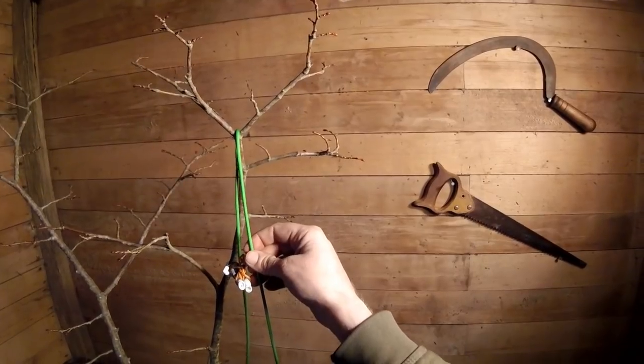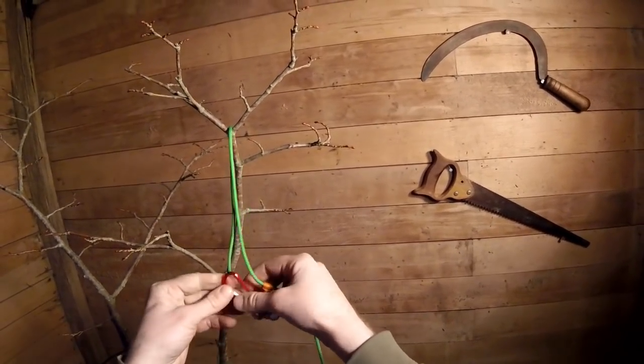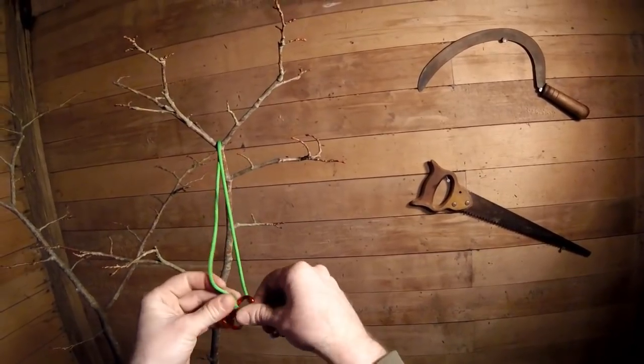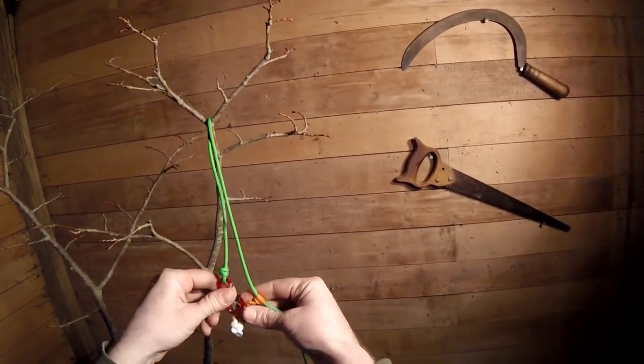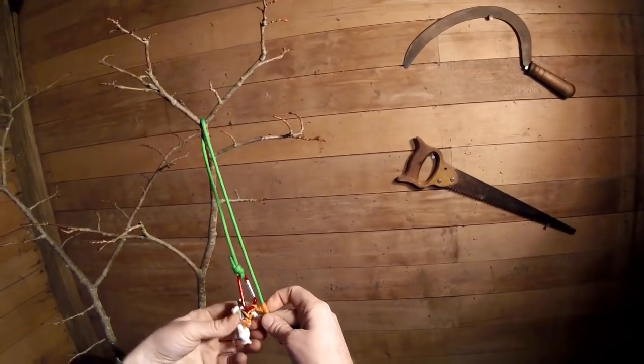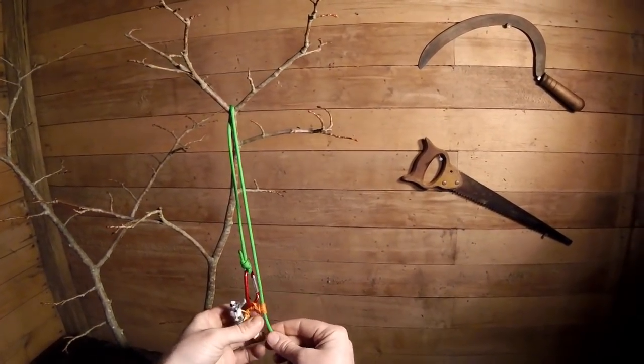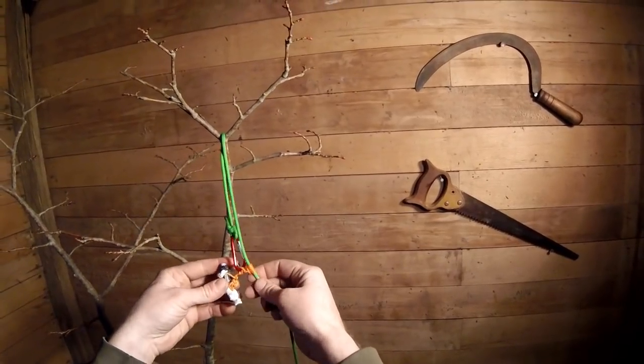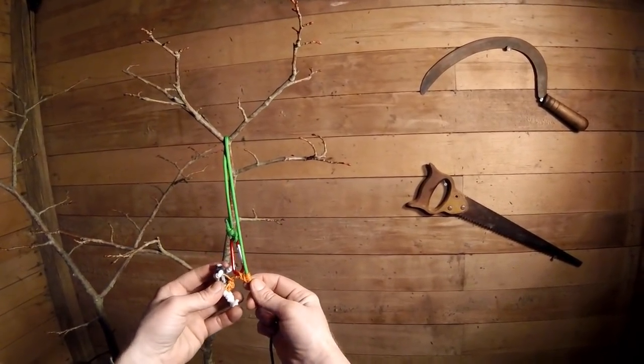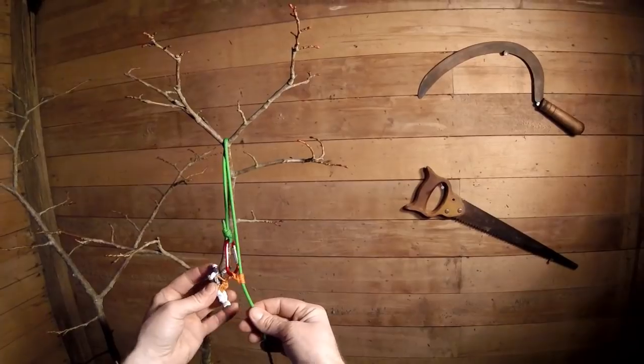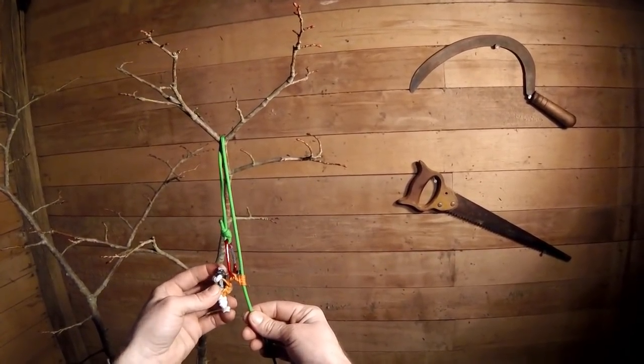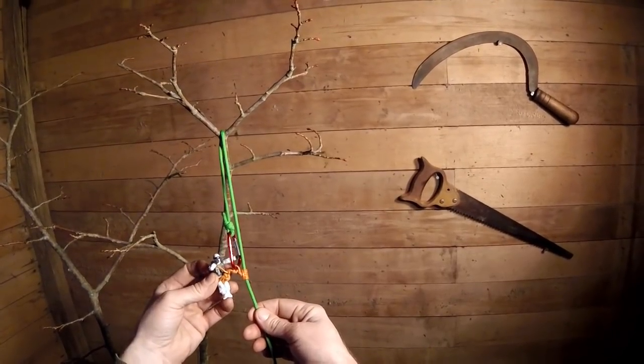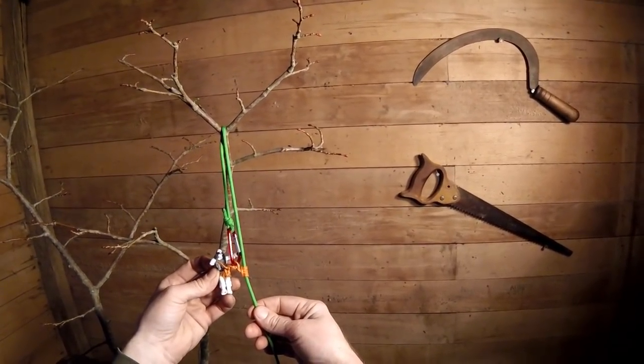So those are just some of the basic concepts. Again, none of this is comprehensive. I just want you to be able to wrap your head around what's going on here. So we're going to look at some of the other stuff in coming videos. But for now, this is the basic concepts behind the climbing systems that we use. We have doubled rope, or moving rope, and then we have stationary rope, or SRT. So until next time, Tree Mugs out.